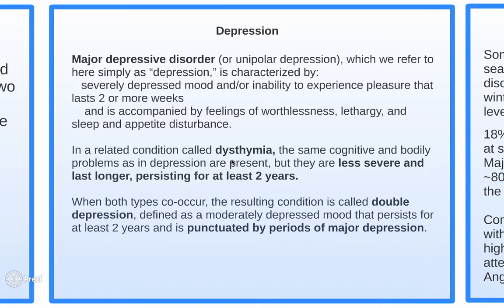A related condition is dysthymia, which has the same cognitive and bodily problems as major depression but is less severe and lasts longer, persisting for at least two years. When both types occur together, the resulting condition is called double depression — a moderately depressed mood persisting for at least two years, punctuated by periods of major depression.